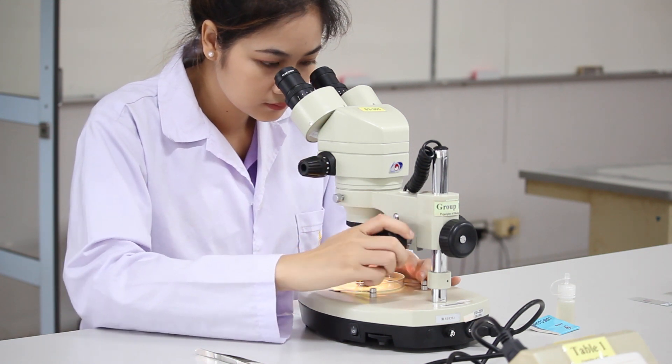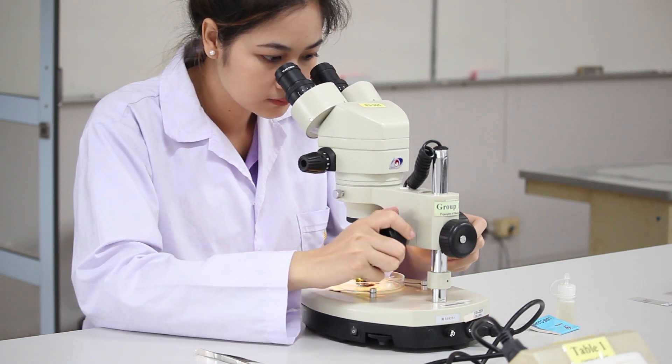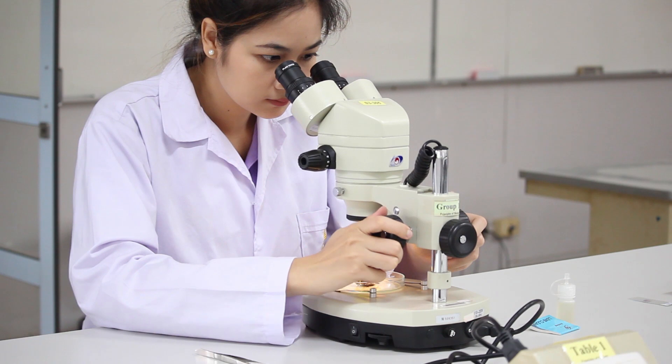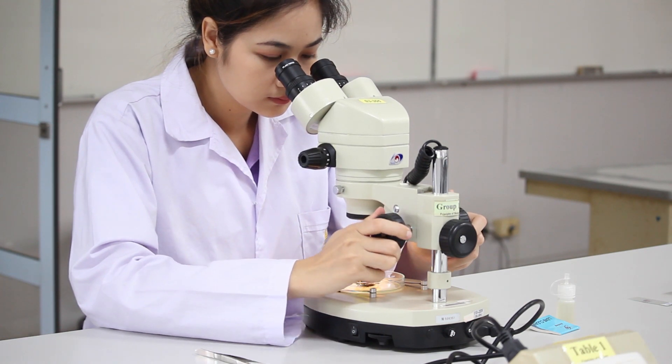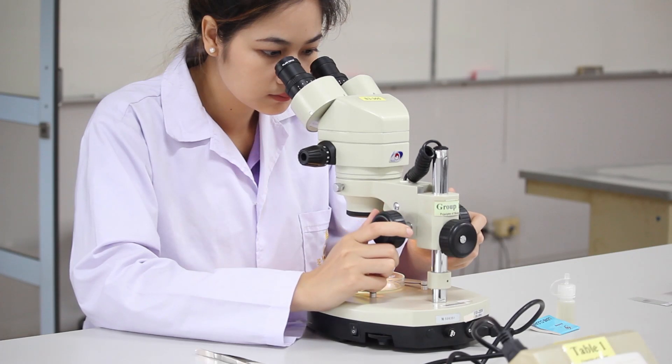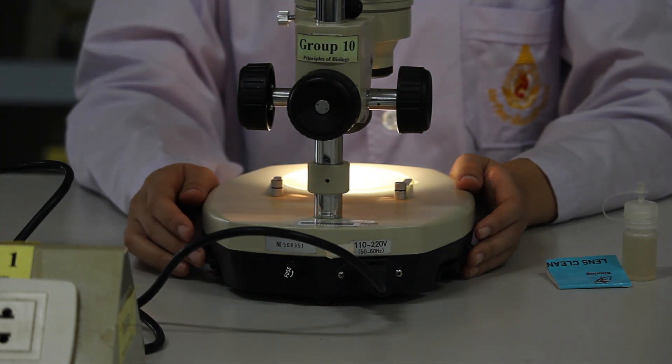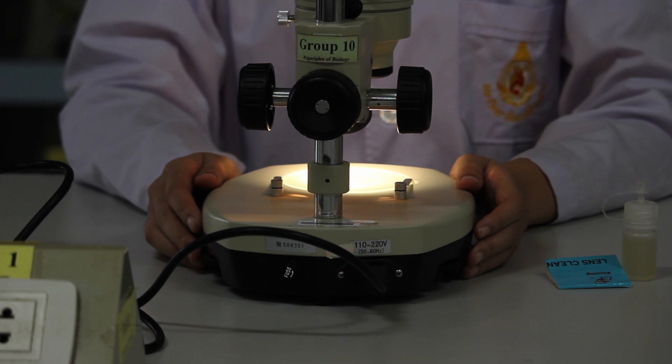After that, adjust the distance between the specimen and the objective lens while looking into the eyepieces until the object comes into focus. The light intensity can be adjusted until the image appears on the eyepiece is appropriately seen.